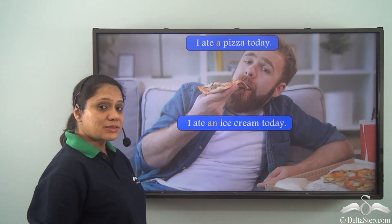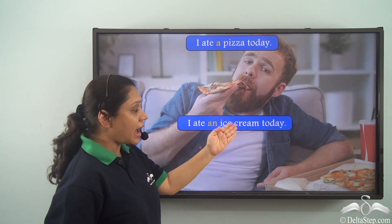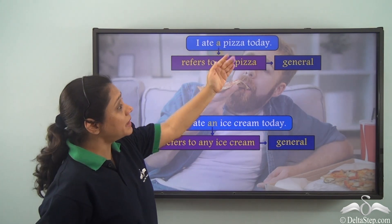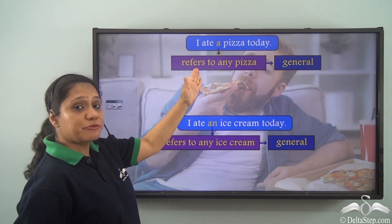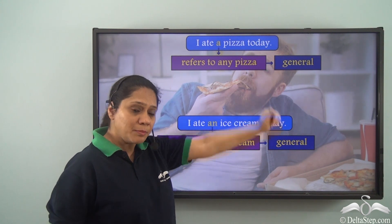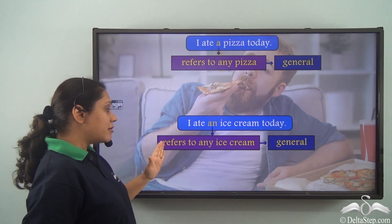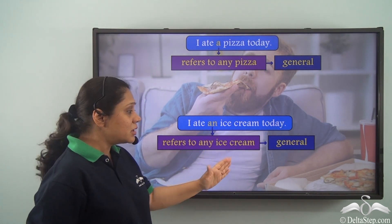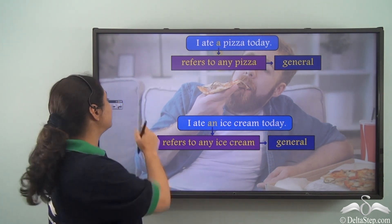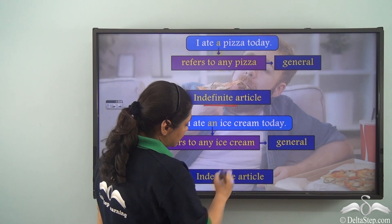Let us read both the sentences here. I ate a pizza today. I ate an ice cream today. In the first sentence, 'a' refers to any pizza — it is referring to something general, not in particular. In the second sentence, 'an' refers to any ice cream — it is referring to ice cream in general, not any particular ice cream. So both a and an are indefinite articles.